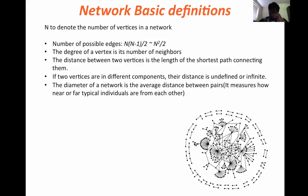There are some basic definitions. If you denote n as the number of vertices in a network, the maximum possible edges it can form is approximately n squared by 2, and r is n times n minus 1 by 2. The degree of a vertex represents the number of neighbors. The distance between two vertices is the length of the shortest path connecting them.